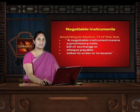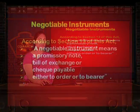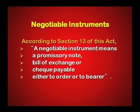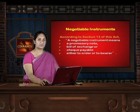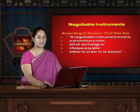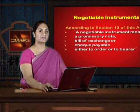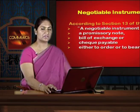Let us take the definition of Section 13 under the Negotiable Instrument Act 1881. A negotiable instrument means a promissory note, bill of exchange, or cheque payable either to order or to bearer. In this definition, what a negotiable instrument does is not discussed, but it merely gives the three categories of kinds of negotiable instrument.